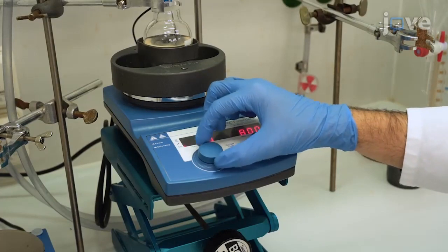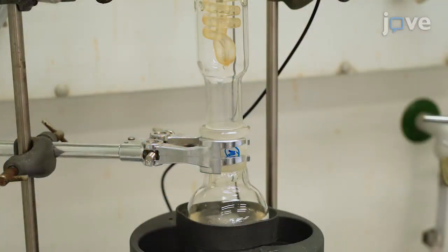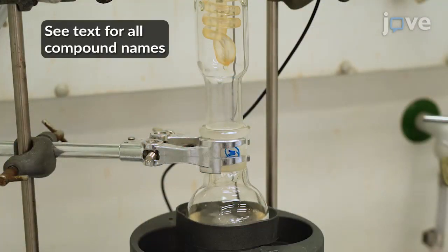Continue stirring for 10 hours at reflux to obtain a clear, colorless solution of glutaramide compound.